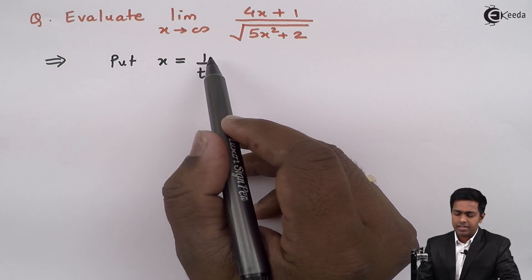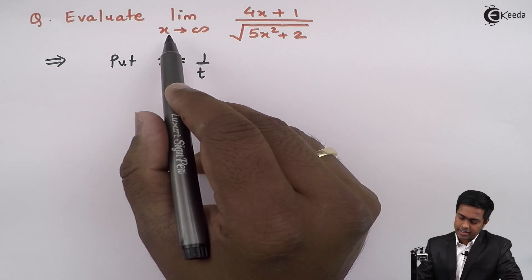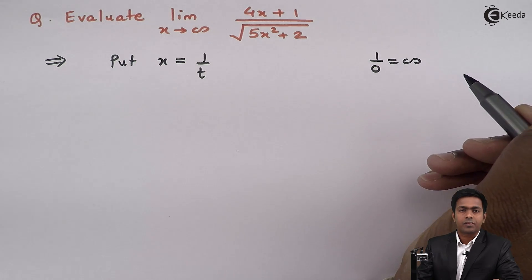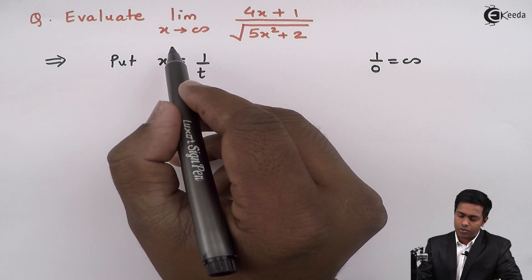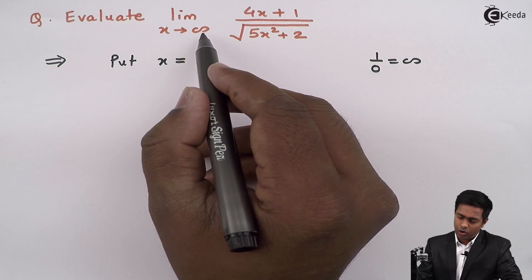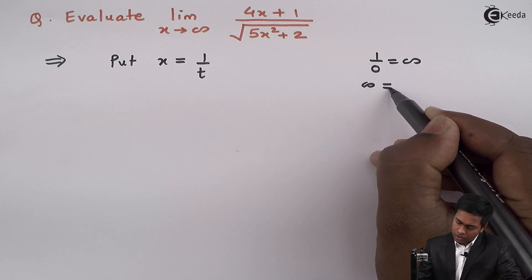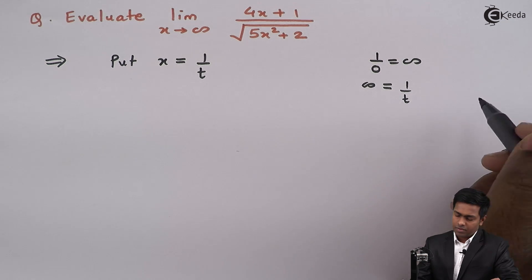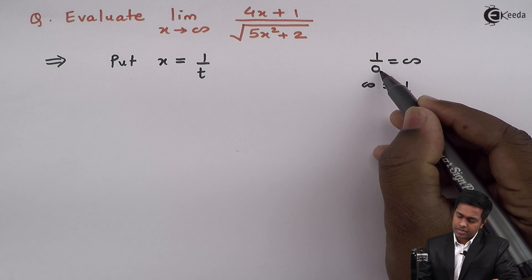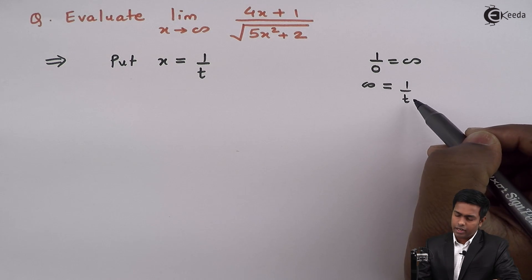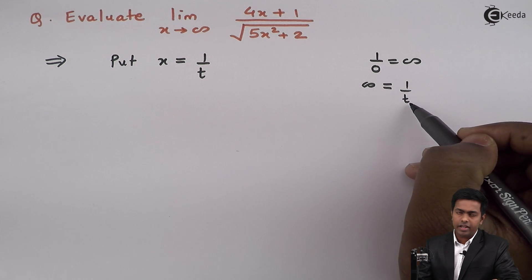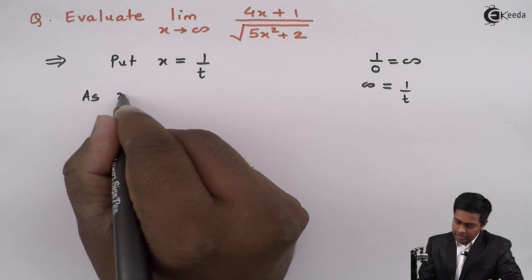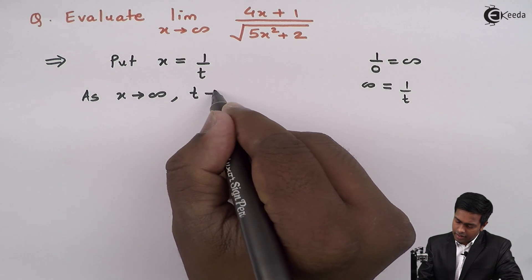When we put x as 1 upon t, and x is infinity, we know that 1 upon 0 is infinity. So if x equals infinity, then infinity equals 1 upon t, which is only possible when t is 0 — because only when the denominator is 0 do we get infinity. Therefore, as x tends to infinity, t tends to 0.